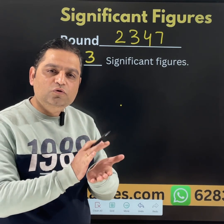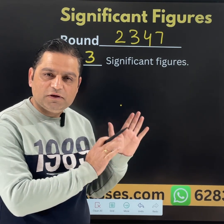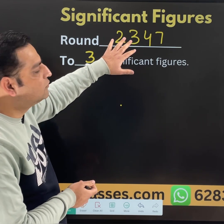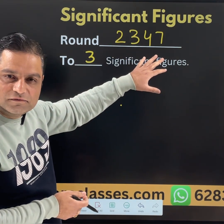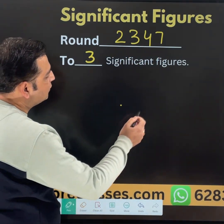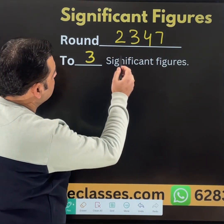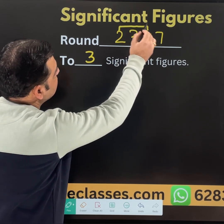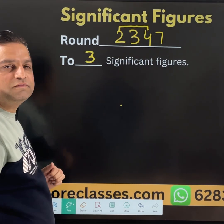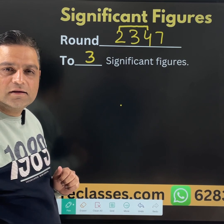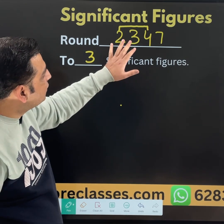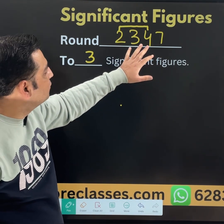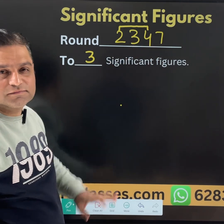Now rule 1 which we are going to discuss: if I need 3 significant figures, that means from this number check the first 3 numbers — 2, 3, 4. We will select those and you need to check the next number as well.